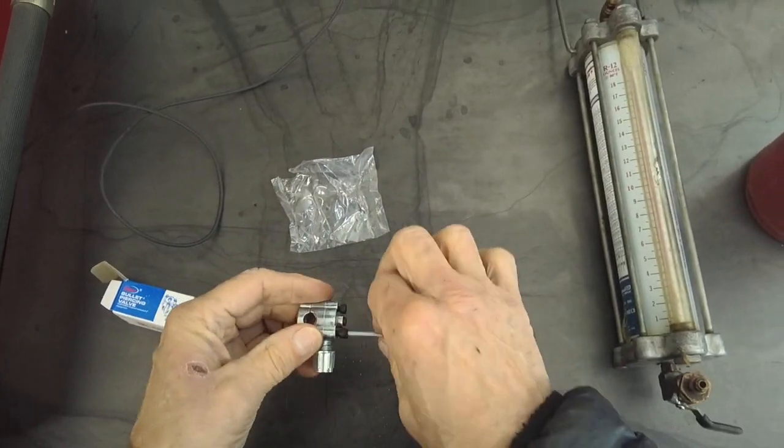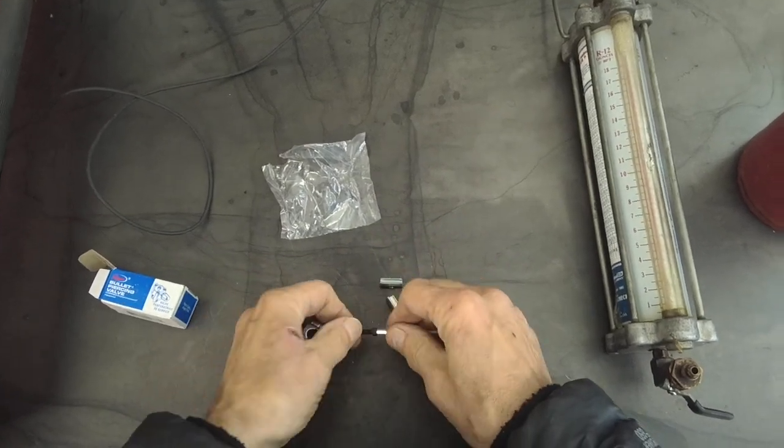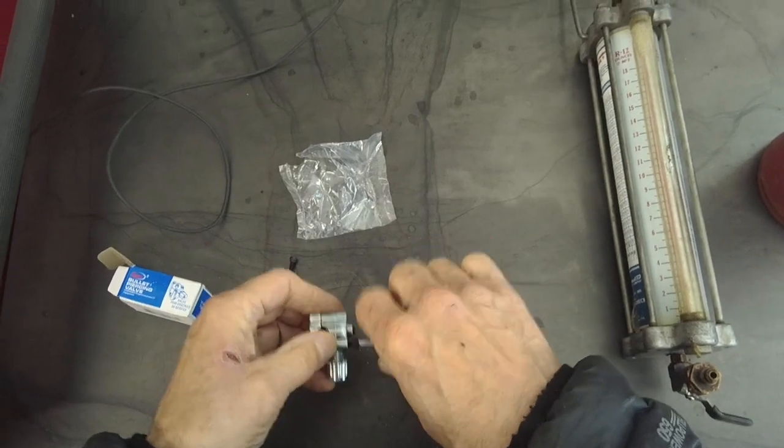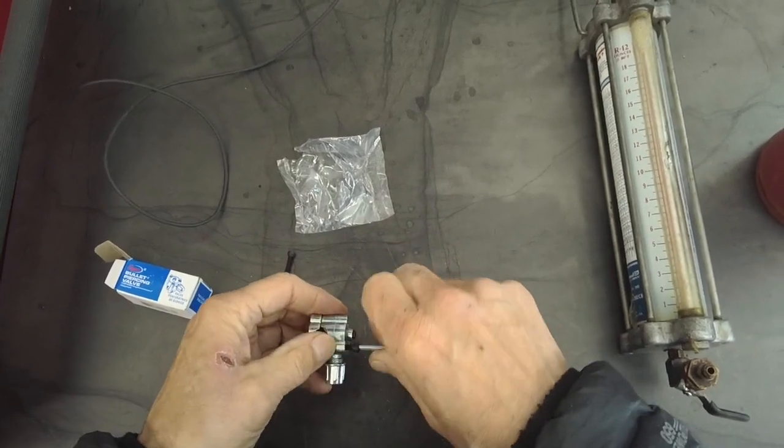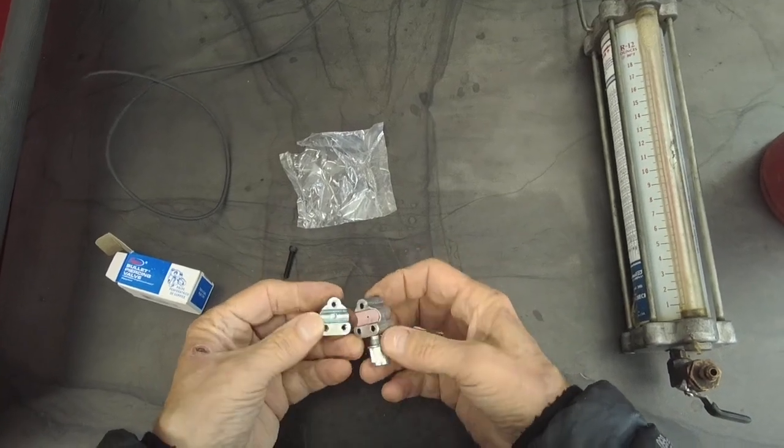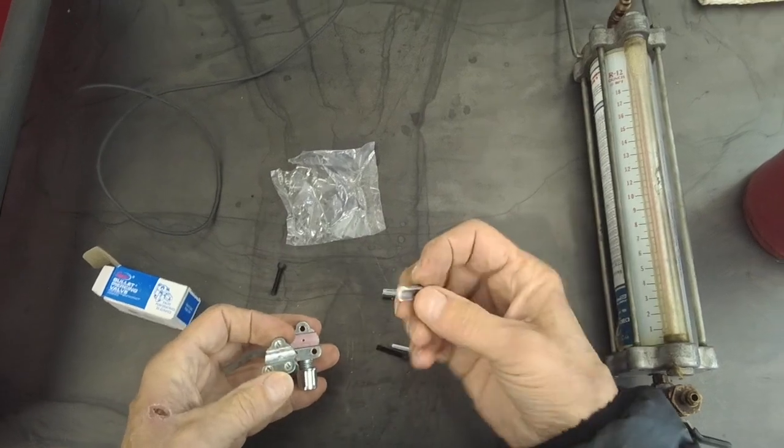Basically, you just take out these bolts and then you want to put the adapter in there for quarter inch line. Because those lines, the process port on that line there on the refrigerator we're working on is a quarter inch.